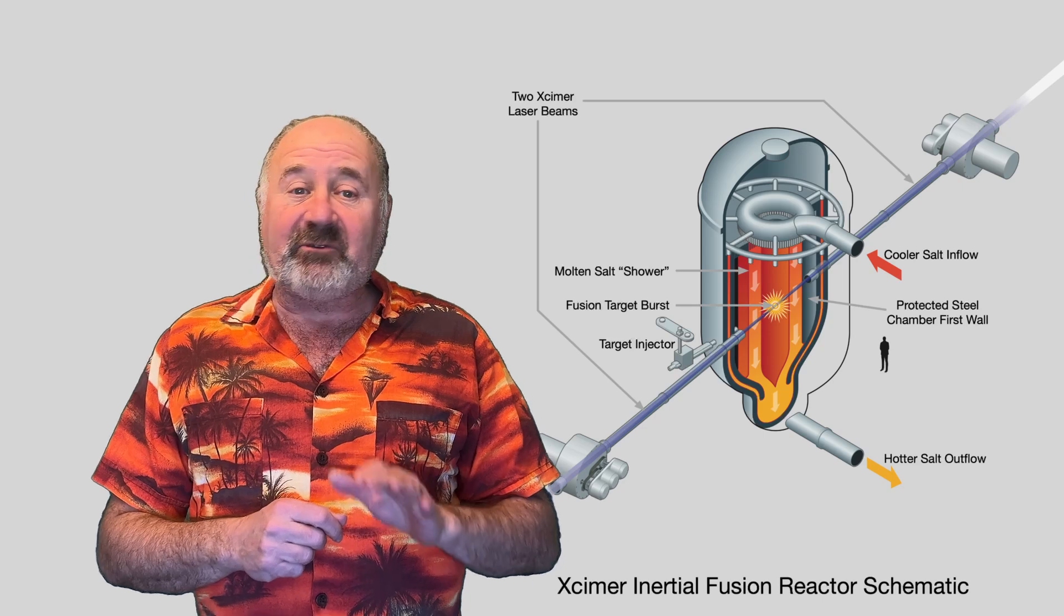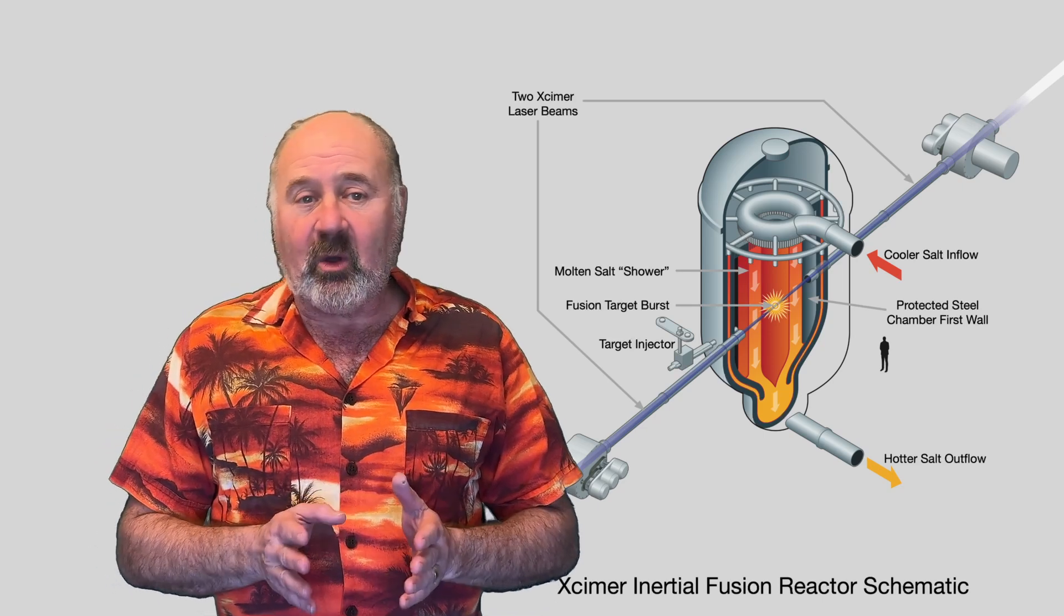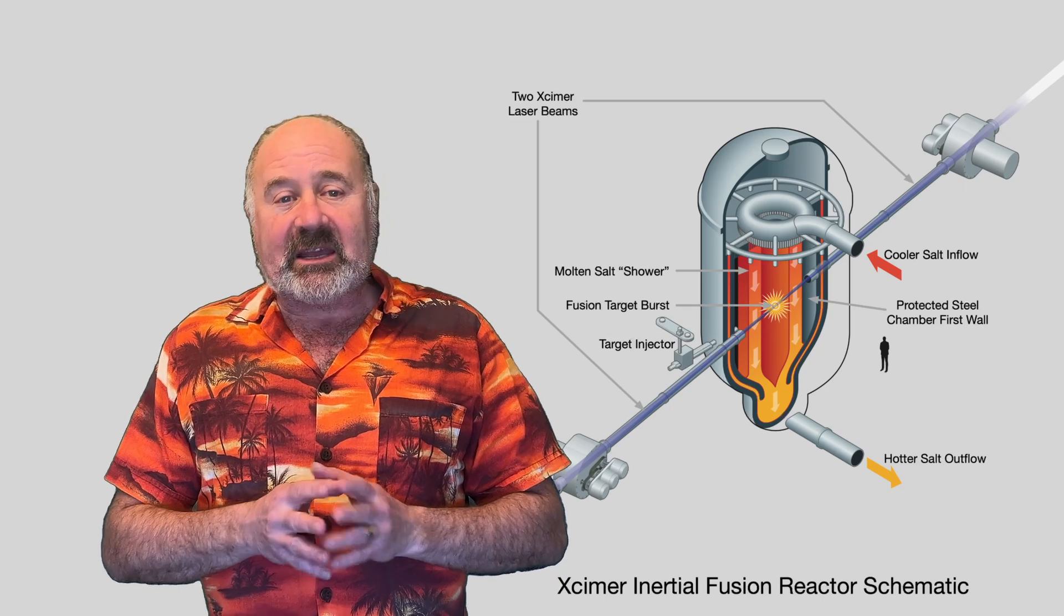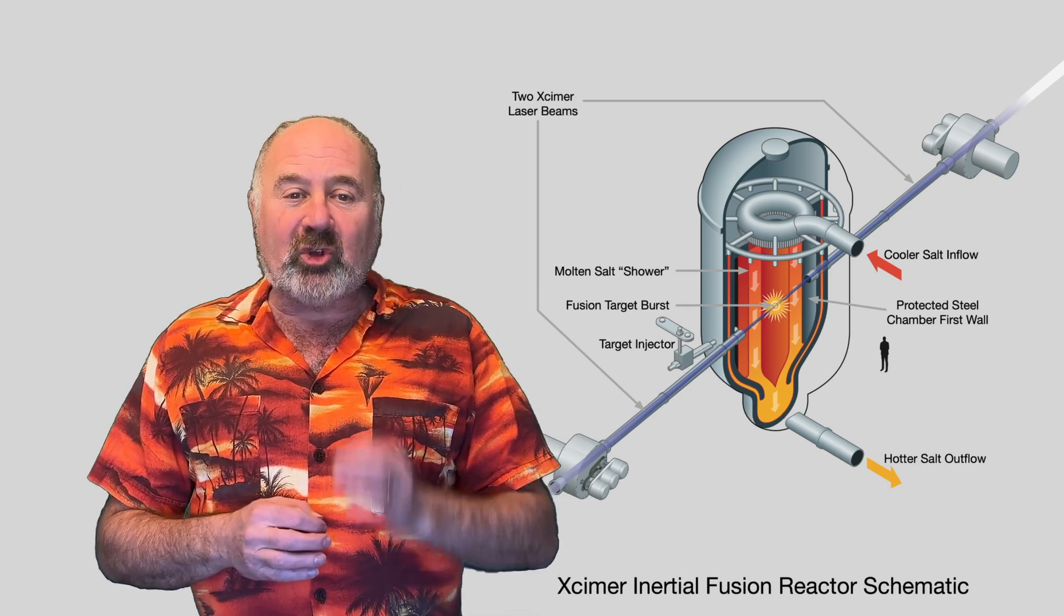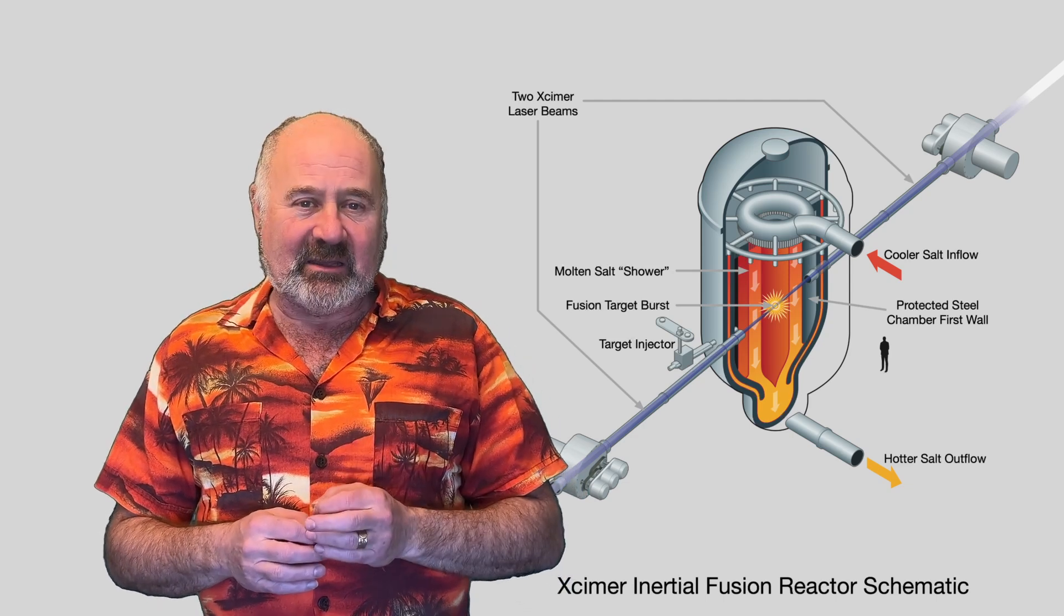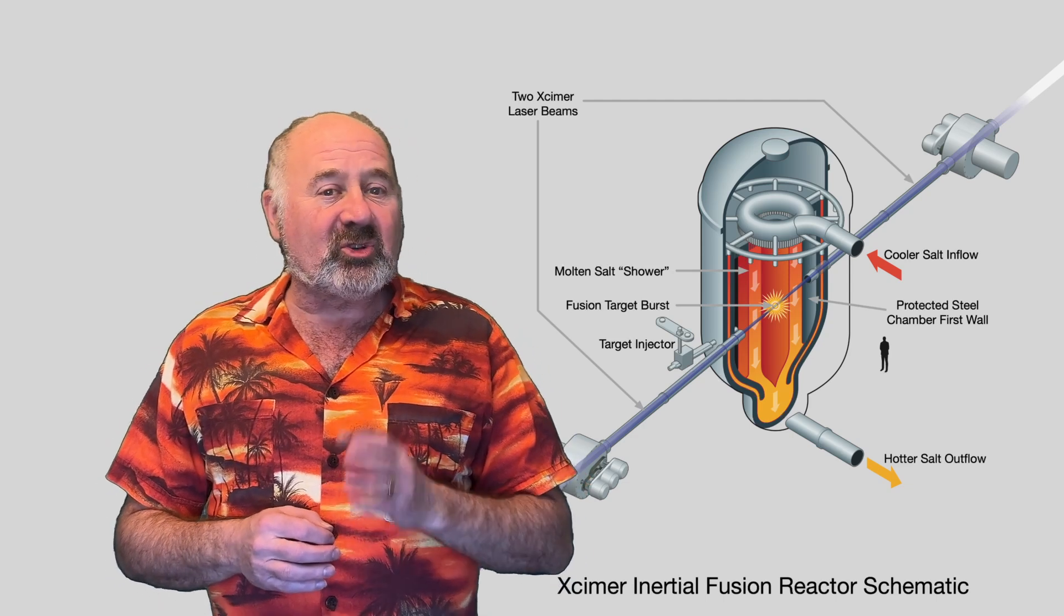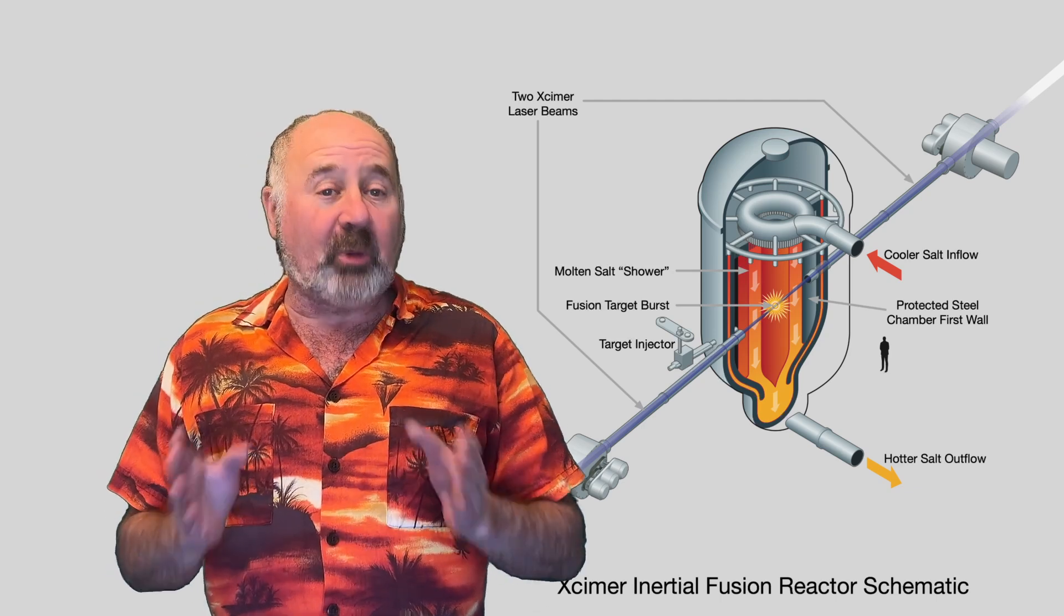There's a reason NIF didn't pick this approach. One is that they started decades ago, and there's been a lot of improvements in excimer lasers since then. Another is, to make inertial confinement fusion work, you need a short pulse of intense light. And that's not what excimer lasers are known for. They spread their energy over a longer pulse.